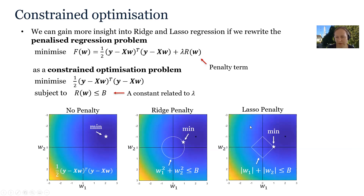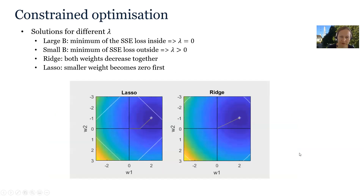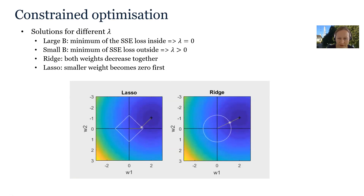Alternatively, if we introduce a LASSO penalty, we have a diamond-shaped region instead. For sufficiently small B this again drives the solution closer to zero, but the solution follows a different path because it must lie inside or on the boundary of this diamond-shaped region. The path of the solution for decreasing values of B can be visualized in this animation, and you can see that it is different for ridge and LASSO.